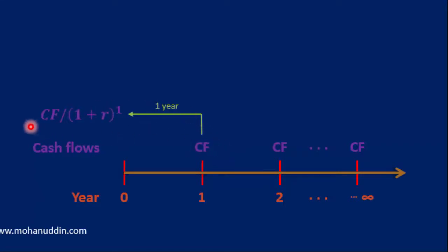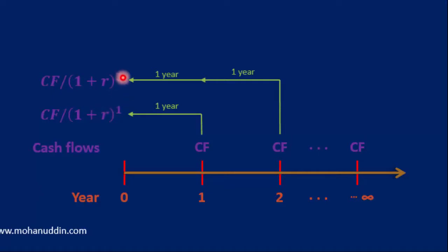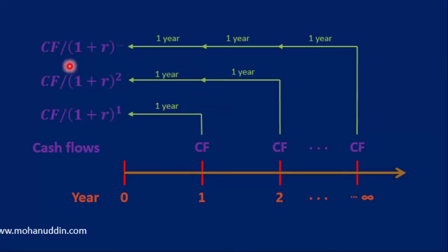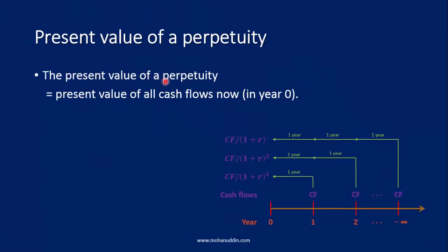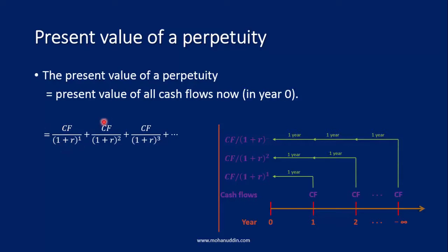For the first cash flow, it is very simple to calculate: CF over (1+r) to the power n, because it is discounted for one year. The second one is discounted for two years, the third for three years, and so on. Each cash flow is discounted for the number of years it is away from now. To find the present value of the perpetuity, we add all of these: CF/(1+r)^1 + CF/(1+r)^2 + CF/(1+r)^3, and the series continues forever.